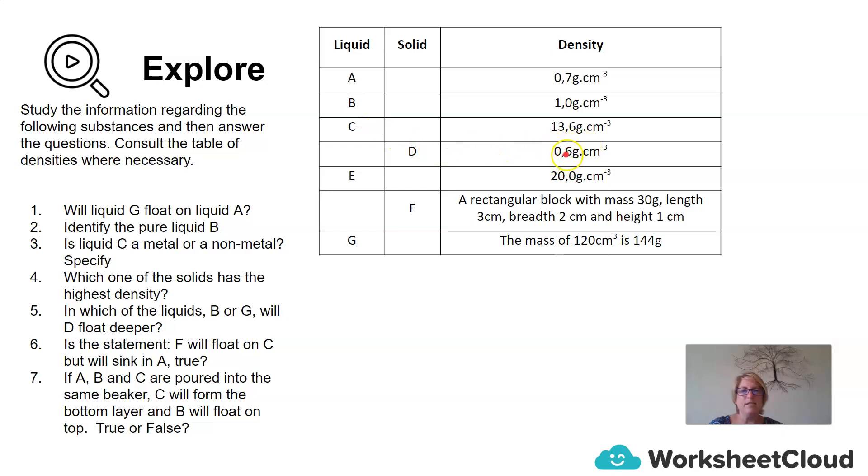In which of these liquids, B or G, will D float deeper? So another way of saying that is, which one will D most likely sink more in? Is the statement F will float on C, but F will sink in A true? So we'll need those densities to be able to calculate whether or not that statement is true or false. And then question seven. If we pour A, B and C into a beaker, C will form the bottom layer, and then B will form the top layer, which means A will be in the middle layer. Is that true or is that false?